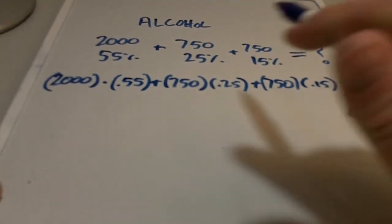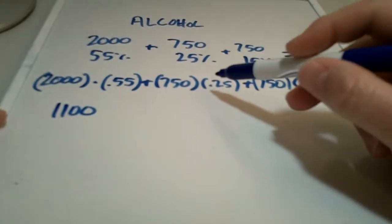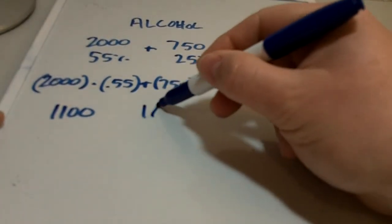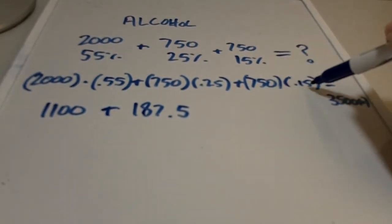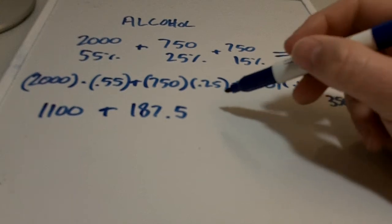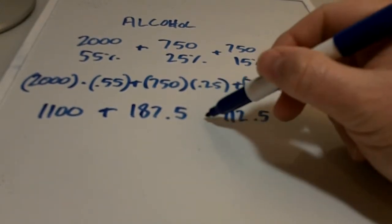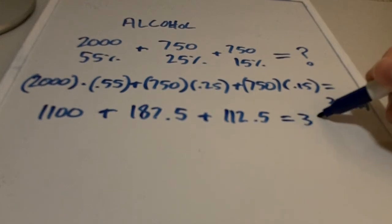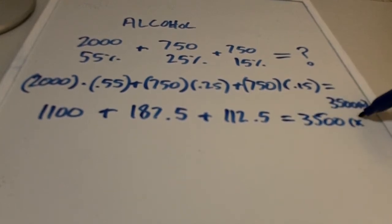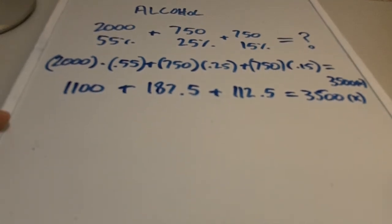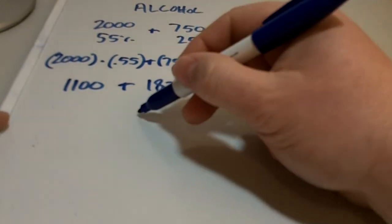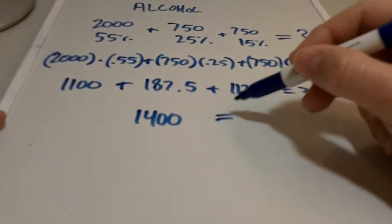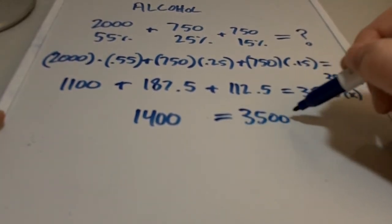So let's go ahead and do the math. 2,000 times 0.55 is 1100. 750 times 0.25 is 187.5. And then 750 times 0.15 is 112.5. And that all equals 3,500x. Alright. So if we add all of these together, I believe that gives us 1,400. And that's still going to equal 3,500x.